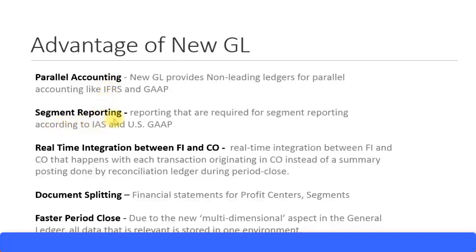Another advantage is segment reporting, and similarly profit center reporting. Some countries require you to report based on segments. We saw in an earlier presentation what segments, profit centers, and business areas are. If you want to do segment-wise reporting, you can do that with NewGL. Profit center-wise reporting is also possible. You can design complete financial statements — both your balance sheet and P&L statement — for segments as well as profit centers using NewGL.